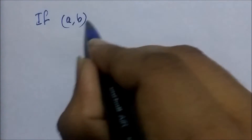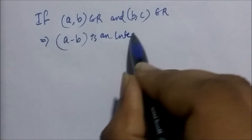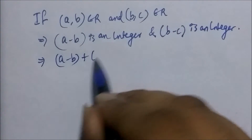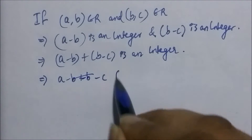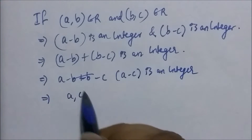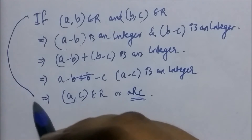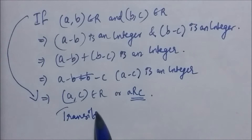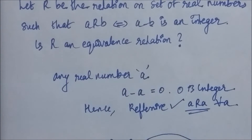Now suppose that A, B is in the relation and B, C is in the relation. This implies that A minus B is an integer and B minus C is also an integer. When you add these two, the result should also be an integer. So A minus B plus B minus C is an integer, which implies that A minus C is an integer, which implies that A, C is in the relation. Hence the relation is transitive. So the relation is reflexive, symmetric, and transitive, and hence it is an equivalence relation.